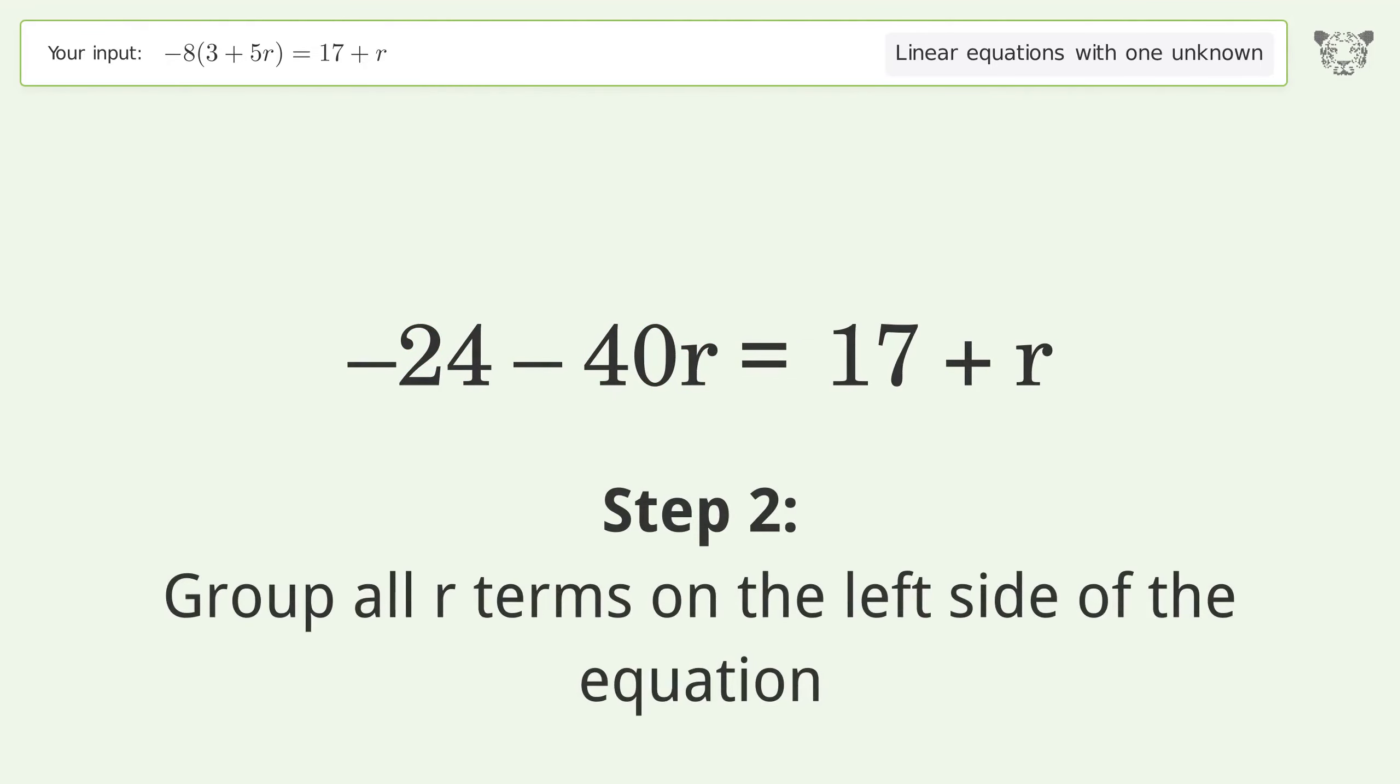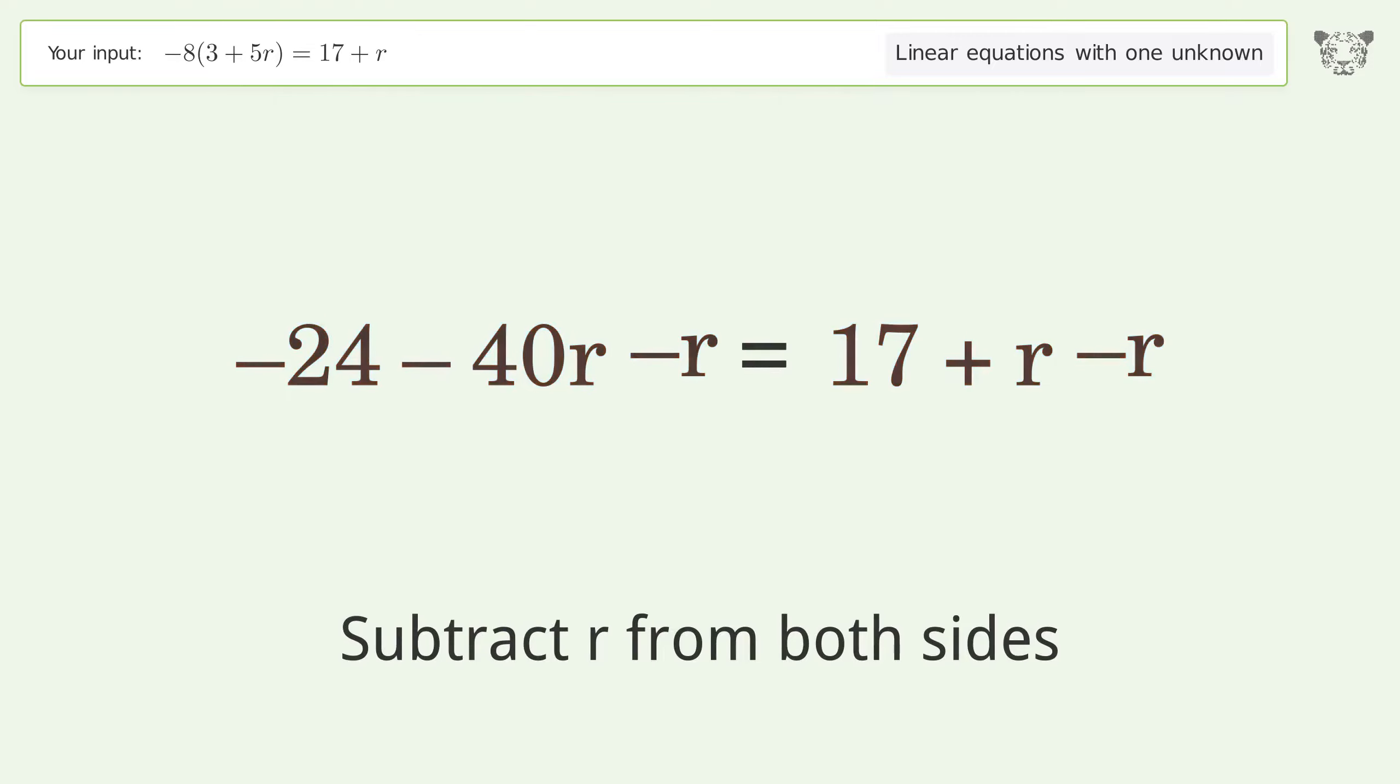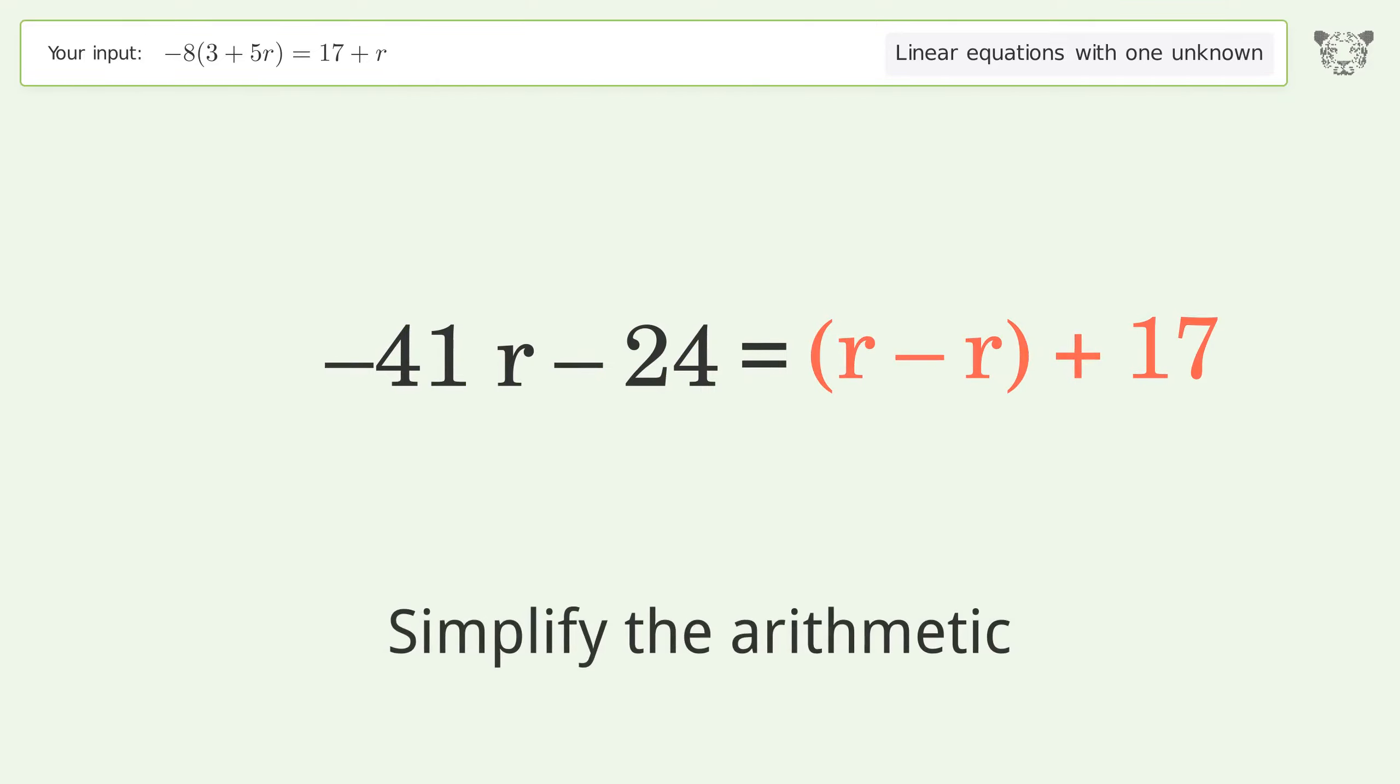Group all r terms on the left side of the equation by subtracting r from both sides. Group like terms and simplify the arithmetic.